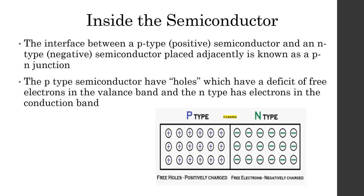Looking inside the semiconductor, the interface between a P-type positive semiconductor and an N-type semiconductor placed adjacently is known as a P-N junction. The P-type semiconductors have holes which have a deficit of free electrons in the valence band, and the N-type has electrons in the conduction band.